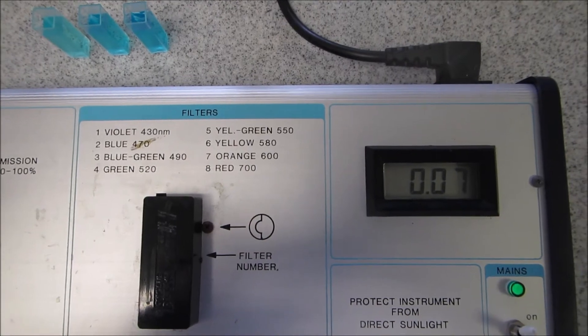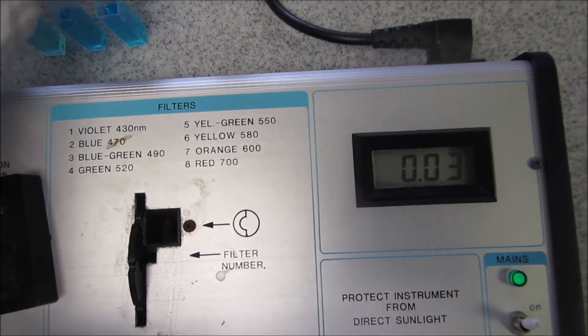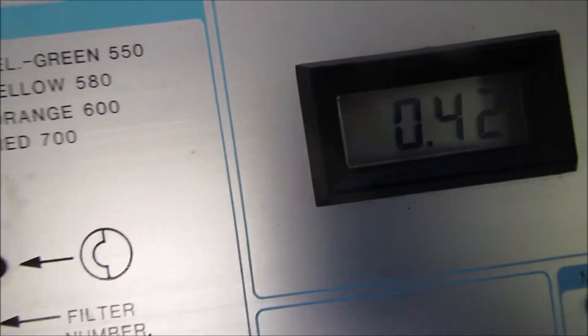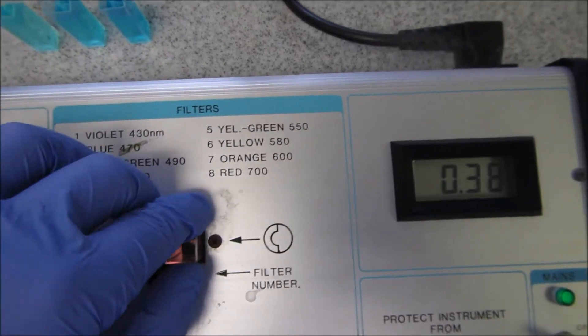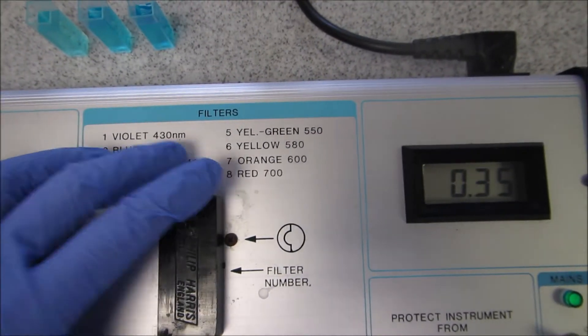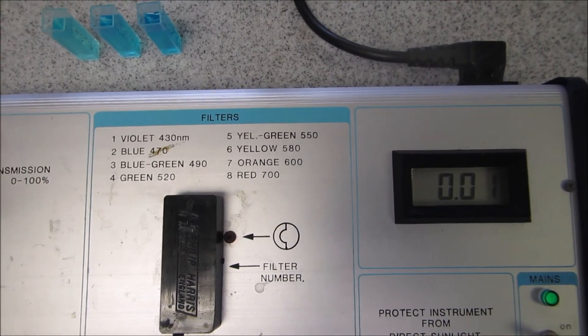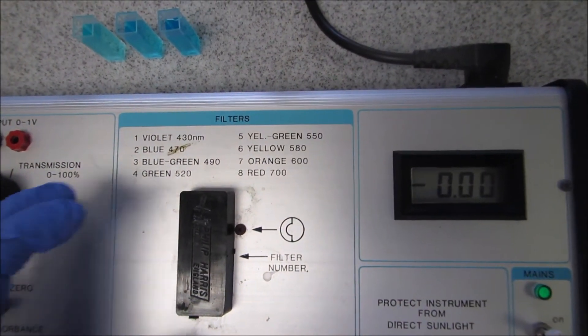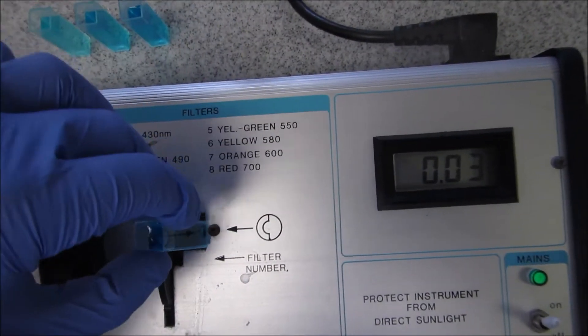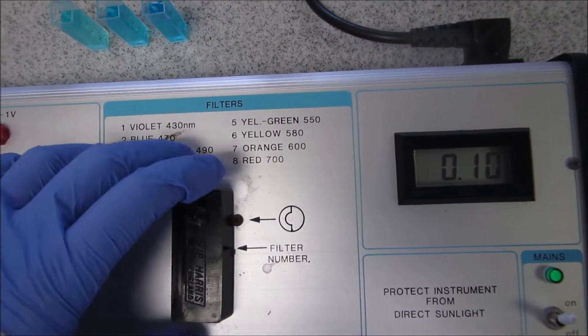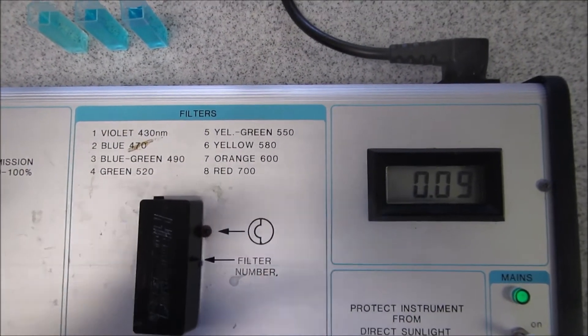I've blanked it, I'll now put in the copper sulfate solution, the 1 molar, and again that's the reading. It's still very low. Now I'm going to change it to wavelength number 4 which is 520 nanometers, put in the blank and zero it. Reading's getting a little bit higher but still very low.